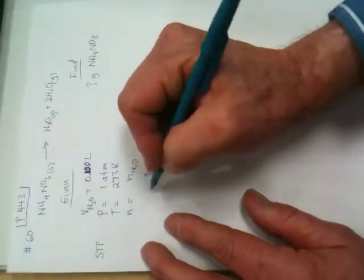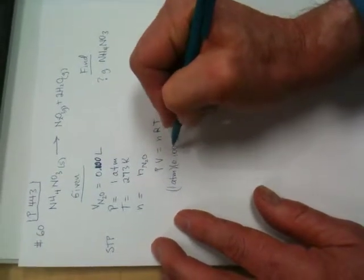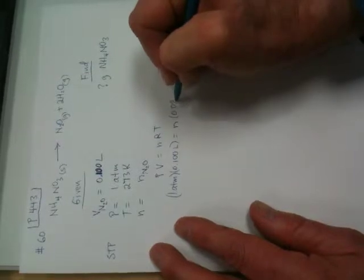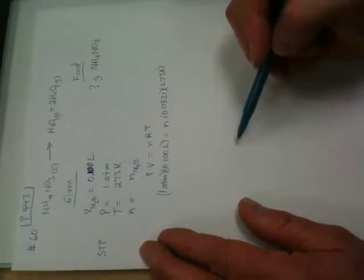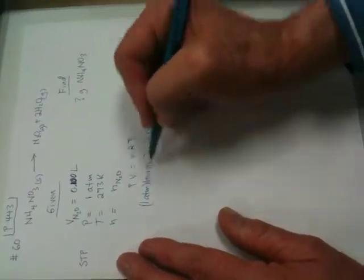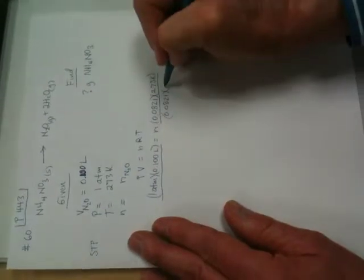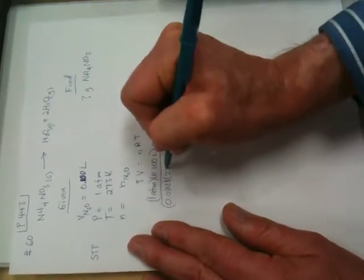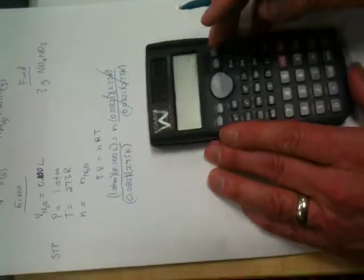So, pressure is going to be one atmosphere, and volume is going to be 0.100 liters, equals our moles that we're looking for. R is 0.0821, and temperature is 273 Kelvin. When we solve for n, we are going to divide both sides by 0.0821 times 273 Kelvin. Now when you run that on your calculator, you see this guy's going to cancel, this guy's going to cancel, as will the Kelvins.